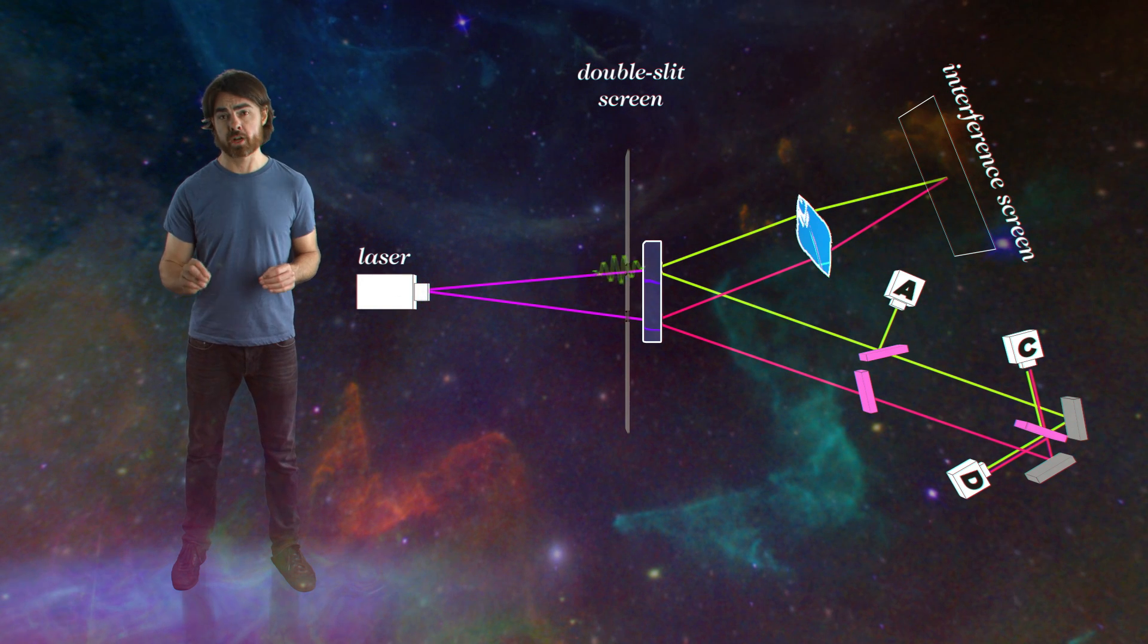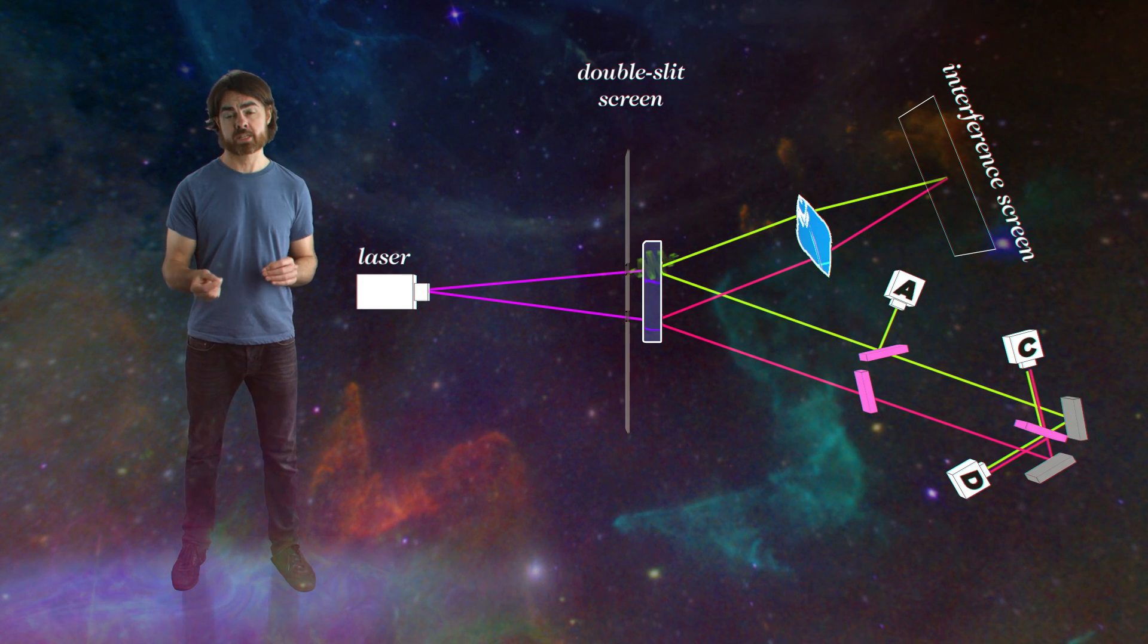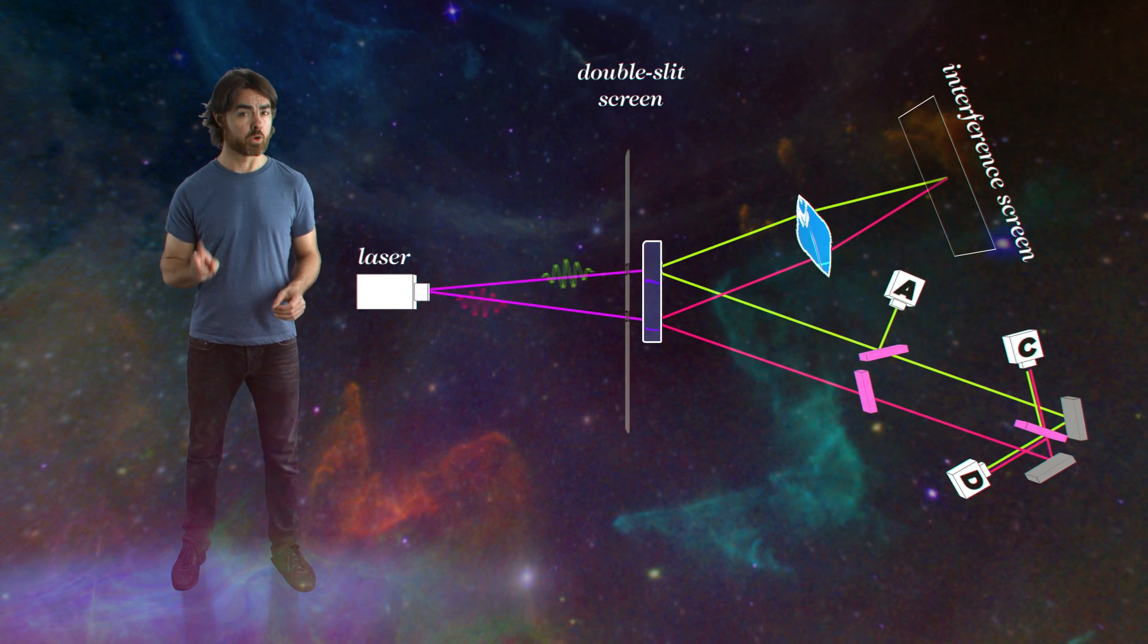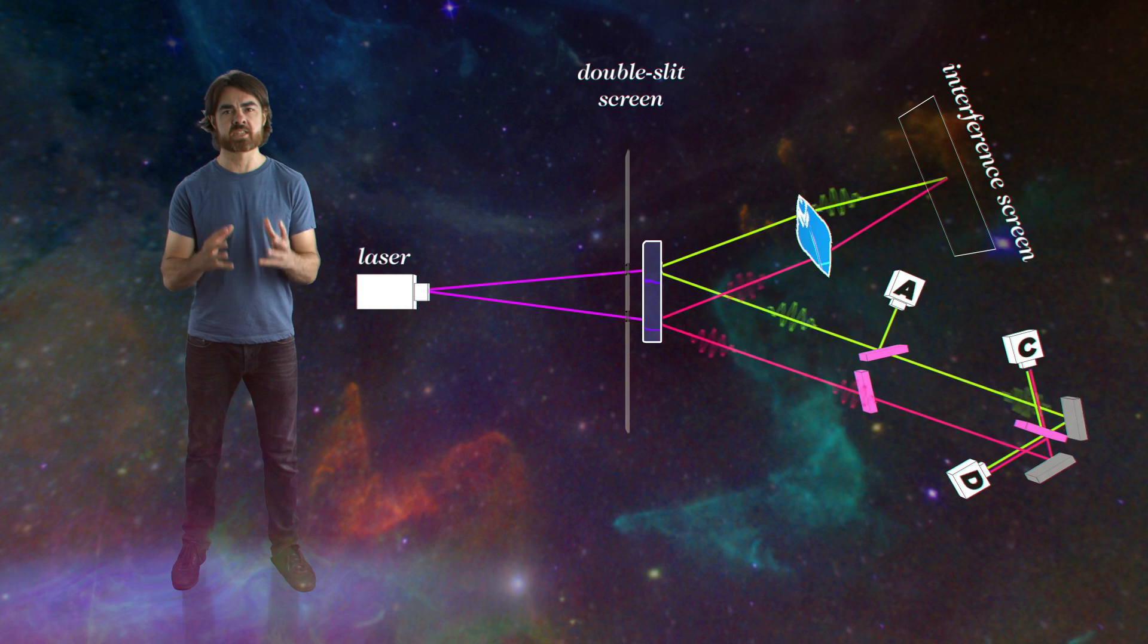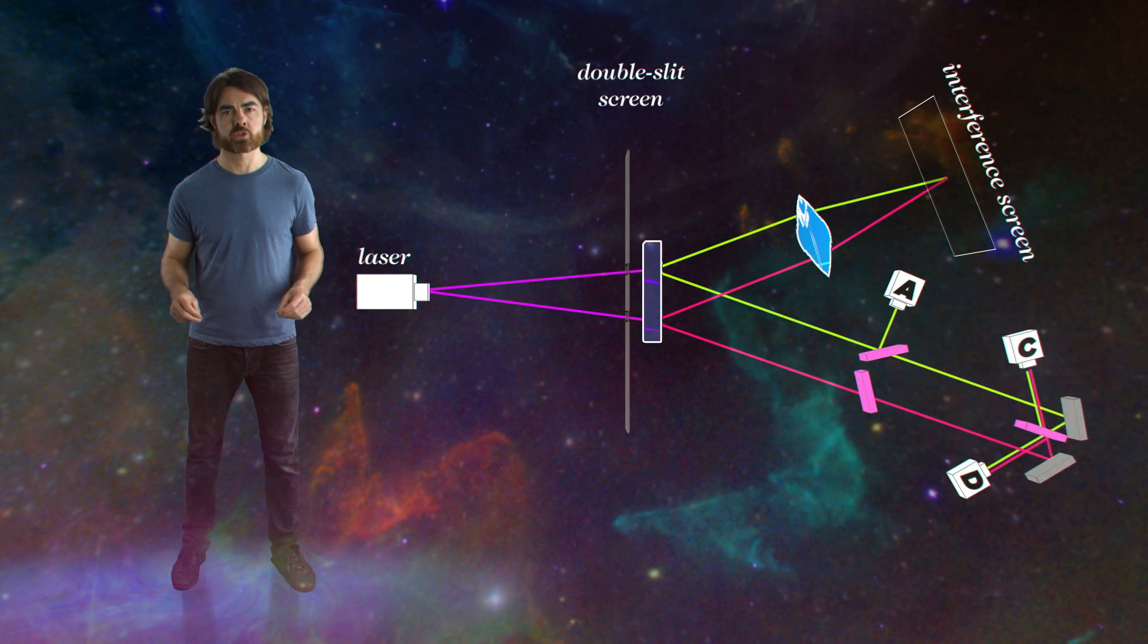One, a photon finds its way to detector A. In that case we know the original photon must have passed through slit A. Or two, either detector C or D fire, in which case we have no idea which slit was traversed.